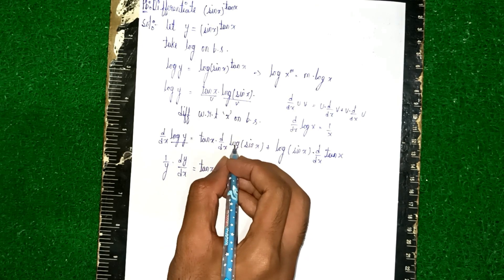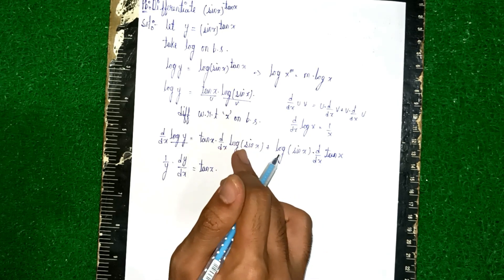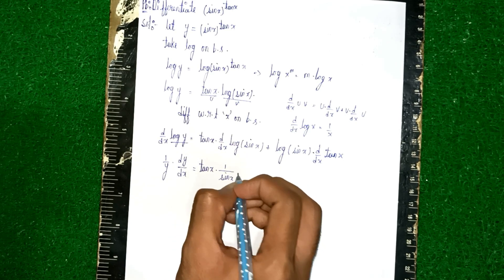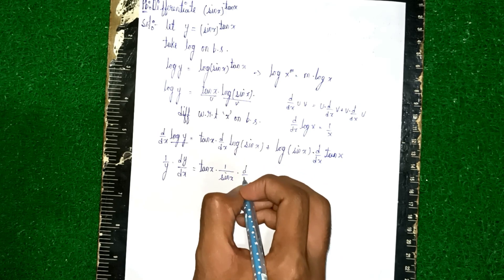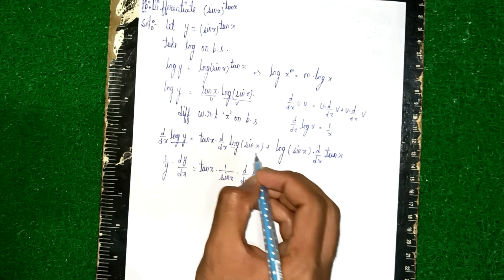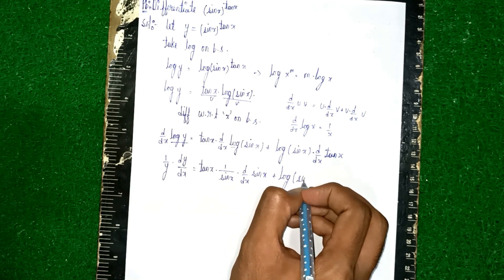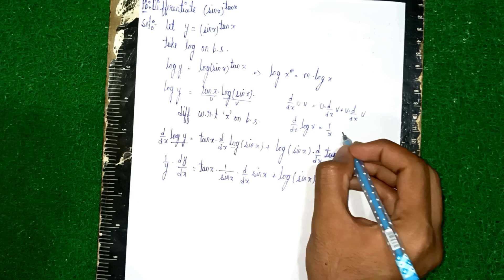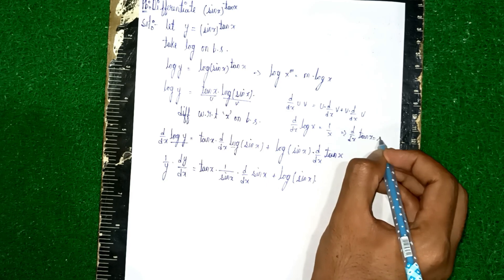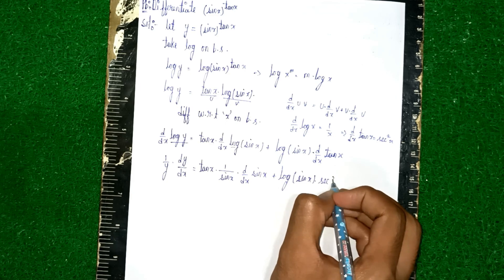Differentiating log(sin(x)) requires chain rule: d/dx(log(sin(x))) = (1/sin(x))·d/dx(sin(x)) = (1/sin(x))·cos(x). And d/dx(tan(x)) = sec²(x).